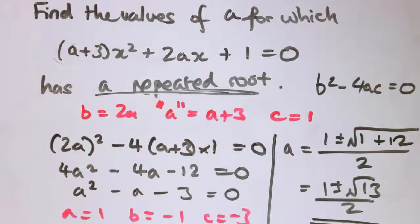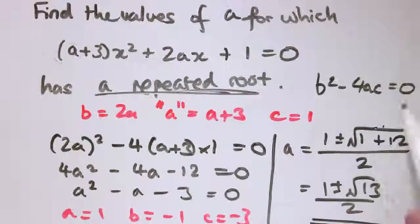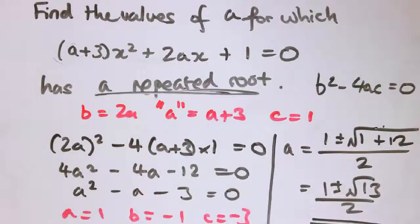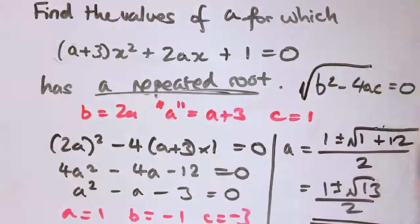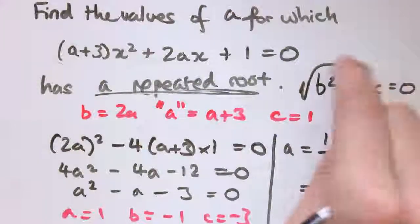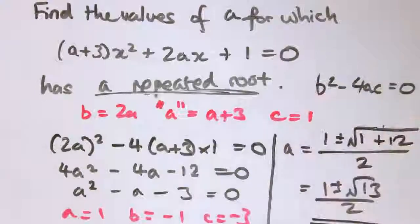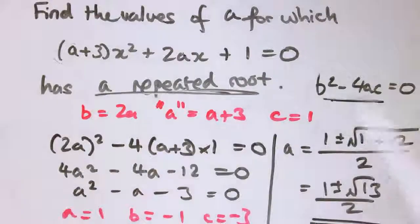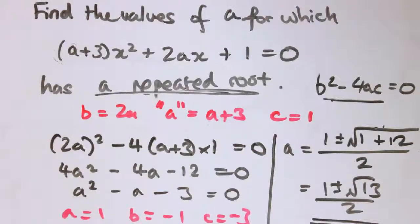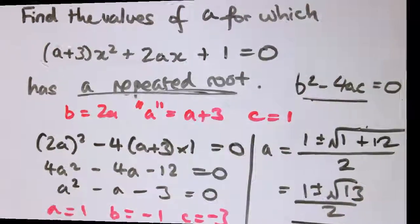Okay, so that video was about the significance of the discriminant. And just one minor point, b squared minus 4ac is the discriminant. Sometimes people get confused and think that the square root of b squared minus 4ac is the discriminant. It doesn't usually make too much difference, but technically it's b squared minus 4ac. Three different cases: if it's positive, two roots; zero, one root; negative, no roots. And we can use it to solve some problems.